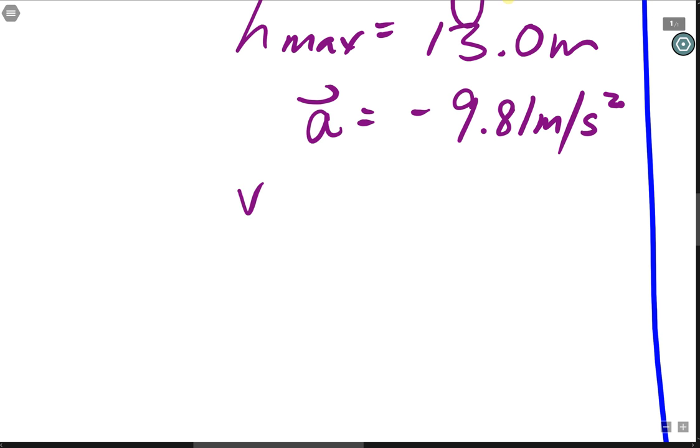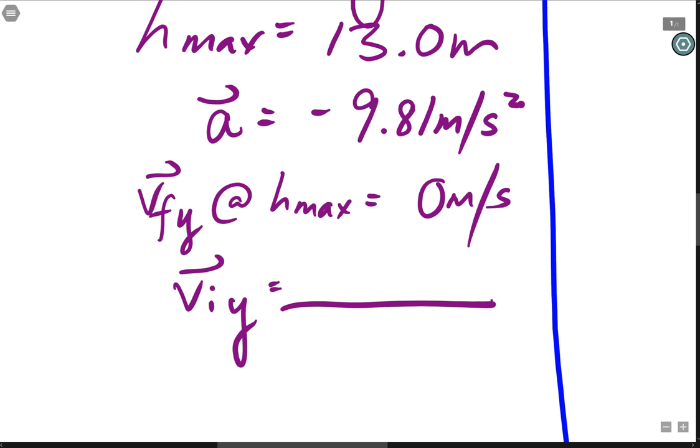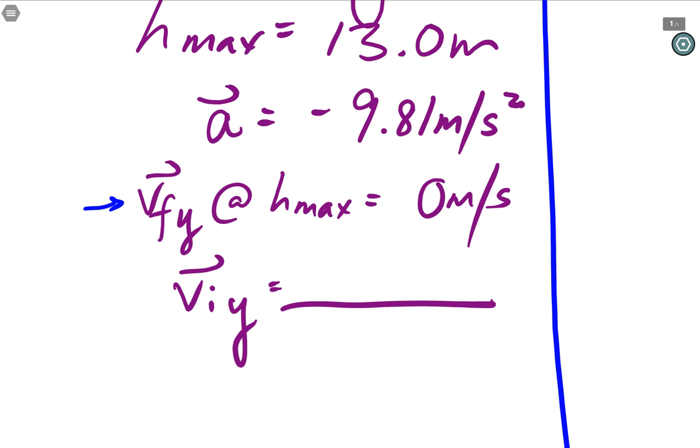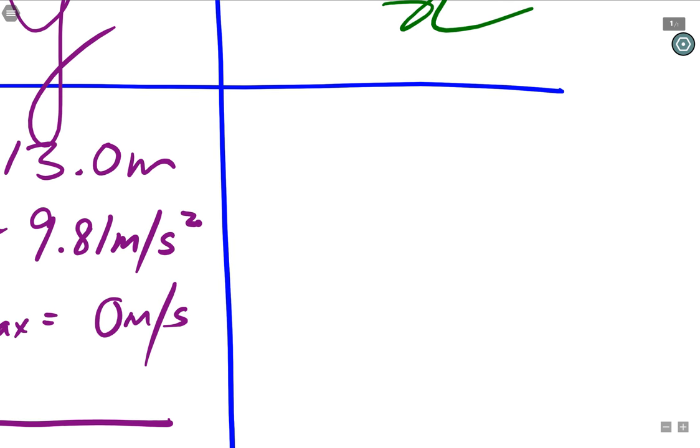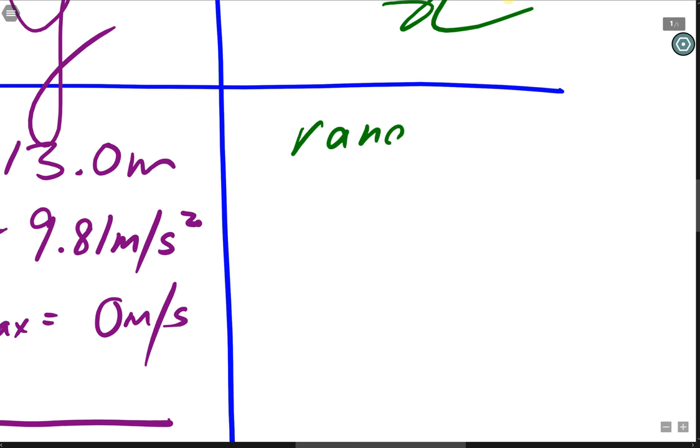We also know at maximum height, the vertical component of the velocity is zero. We also want to find viy. These are what we're given. And notice that this one right over here, we're not given the vfy, but we know that because of the nature of projectile motion.